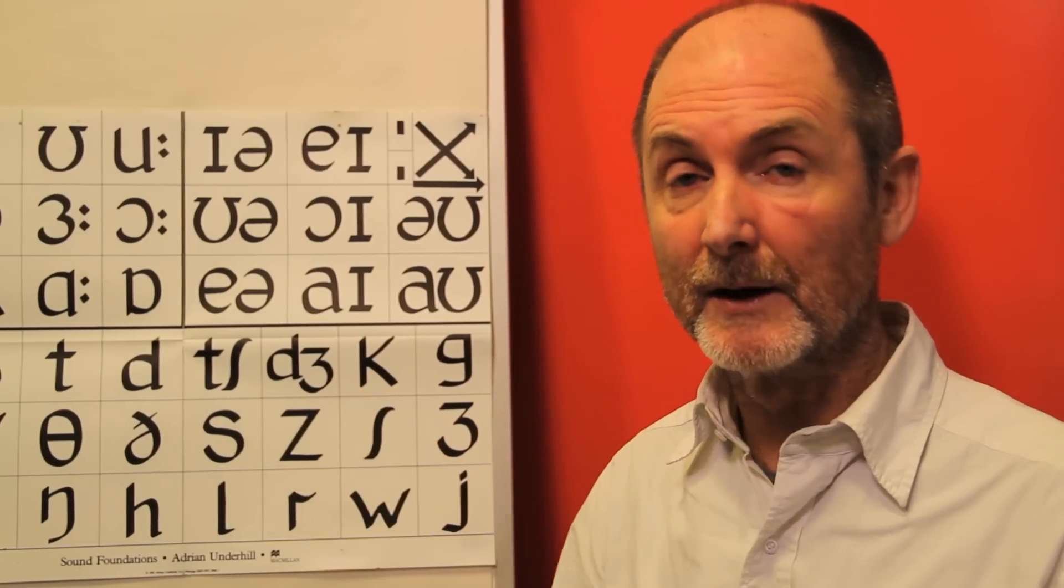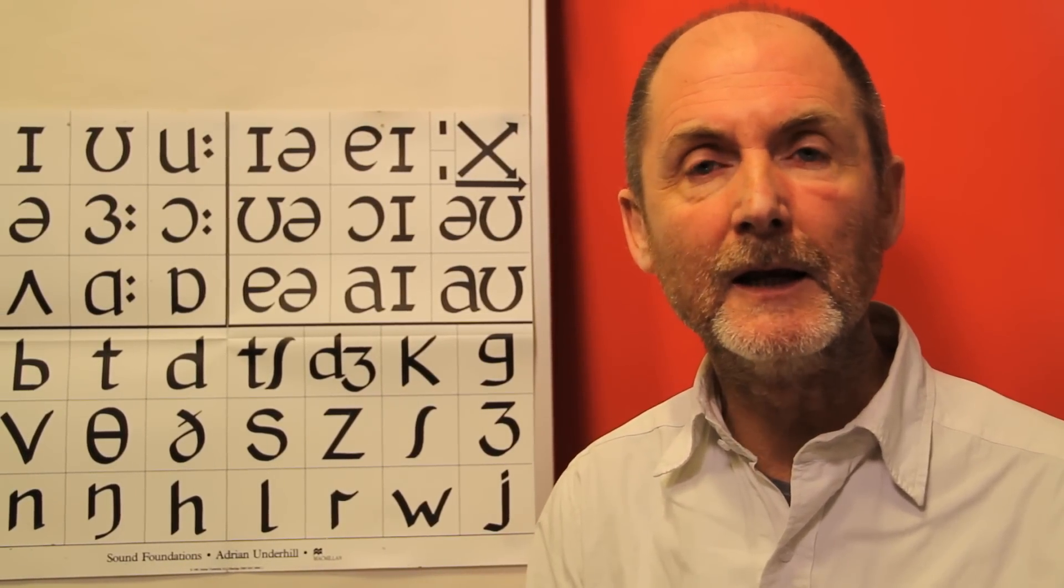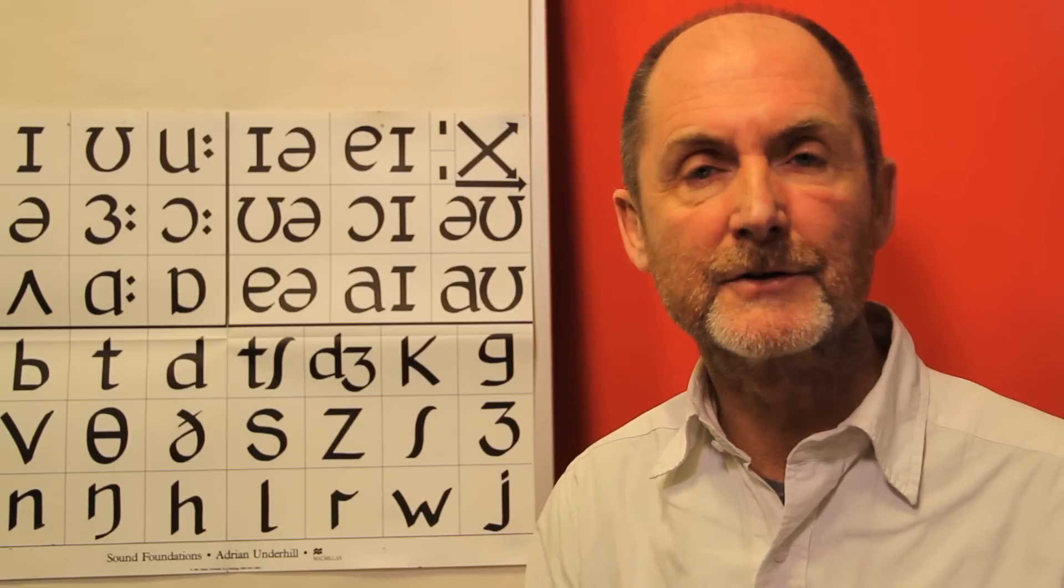I divide pronunciation into three levels. I just call them level one, level two, level three. Level one is sounds. For example, here are the sounds. This is level one. Level one is working at the level of individual sounds: E, I, U, P, S, T.